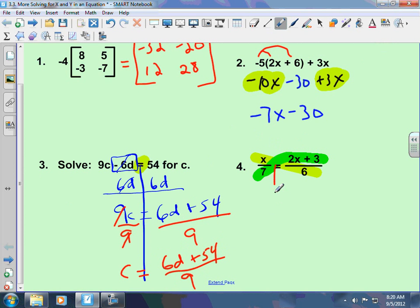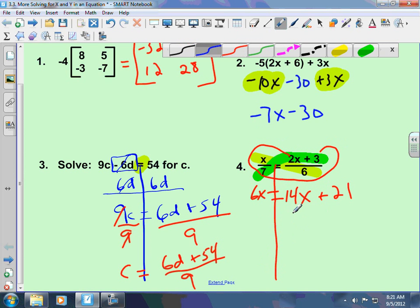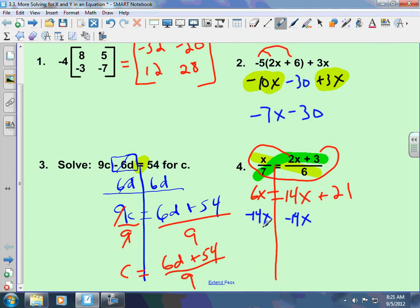So, I have x times 6, which is 6x. 7 times 2x, which is 14x. And 7 times 3, which is plus 21. Now, what do I have to do? I have to get all my x's on one side. All my numbers without x's on the other. So, I'm going to subtract 14x. That's going to give me negative 8x equals 21.